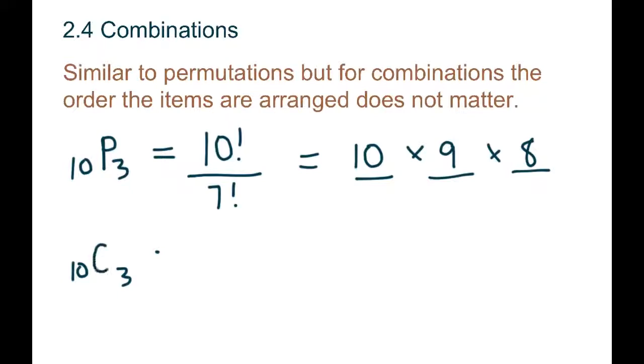So on your calculator, when you go to the math over to probability, you can see the permutations are number two, they have NPR. And then for the C's, we use NCR, which is the one right below it, number three, and that's really the only difference.